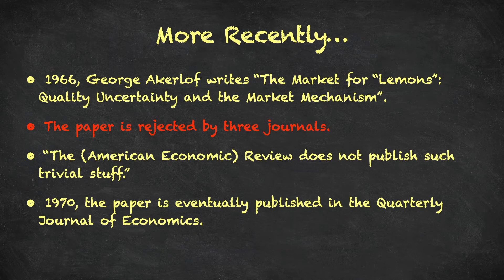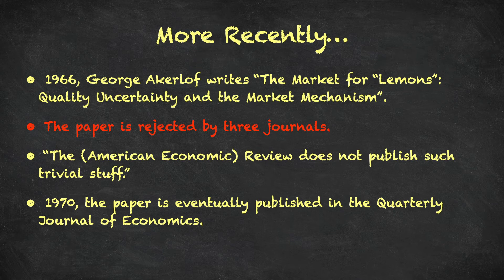Now for some more recent history. In 1966, an economics student, George Akerlof, writes a paper — 'The Market for Lemons: Quality Uncertainty and the Market Mechanism.' When we say lemons here, this isn't referring to the fruit; it's an American term for a car that is very likely to break. In English we might say a banger or death trap, but in America they say lemons for this kind of poor quality car. The Market for Lemons was about the used car market and looked at the question of why secondhand cars are sold at such lower prices than brand new cars.